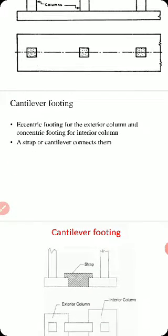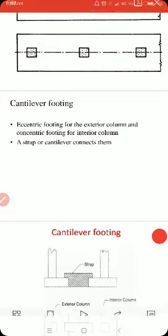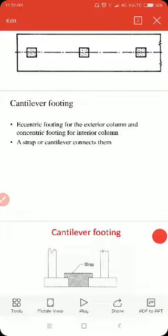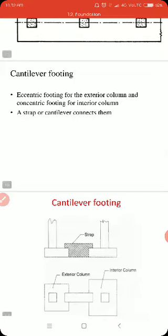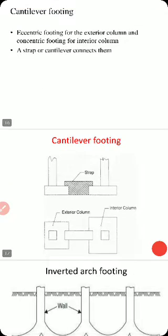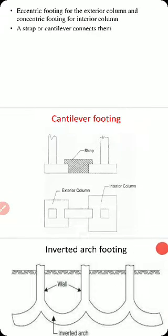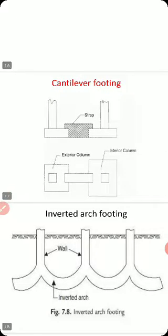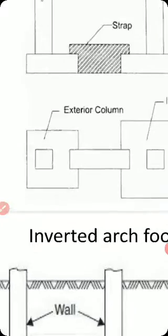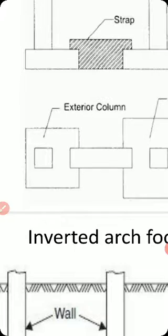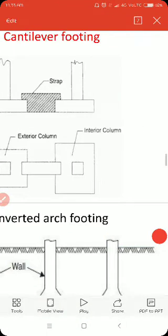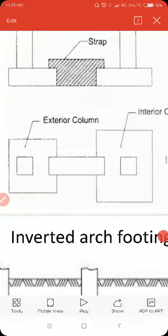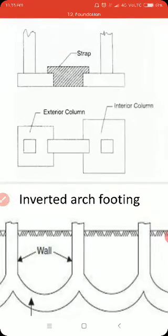Cantilever footing uses an eccentric footing for the exterior column and a concentric footing for the interior column, connected by a strap or cantilever beam. In cantilever footing, the strap connects the foundation for the exterior column with the foundation for the interior column.